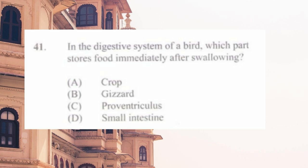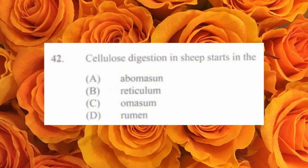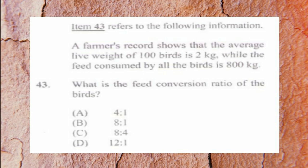Question number forty-one: in the digestive system of a bird, which part stores food immediately after swallowing? a) crop, b) gizzard, c) proventriculus, d) small intestine. The answer is a) crop. Question number forty-two: cellulose digestion in sheep starts in the a) abomasum, b) reticulum, c) omasum, d) rumen. The answer is d) rumen.